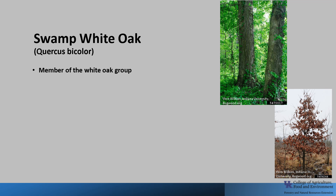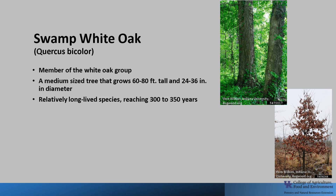It is one of 20-plus species of oak found in Kentucky. Swamp White Oak is a medium-sized tree that grows 60 to 80 feet tall and 24 to 36 inches in diameter. It is a relatively long-lived species, reaching 300 to 350 years of age.